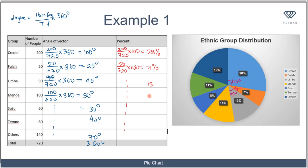When you sum up all these percentages together, you should get 100%. This is the pie chart that represents the distribution of ethnicity in that particular secondary school in Sierra Leone.